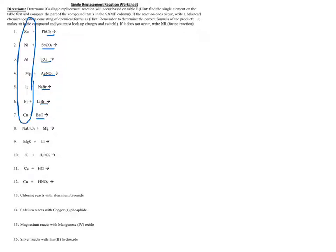We need to figure out if these will react. If I look at the single element, I just want you to take notice that sometimes the single element, like in number one, is just Zn, and sometimes the single element might have a subscript, like I2. When you are writing single replacement reactions and you're writing an element by itself, you need to make sure you keep in mind the elements that are diatomic.